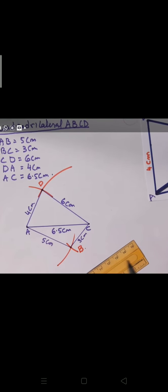Once you join those lines, your quadrilateral is done. The important thing is to write all the measurements on the figure — don't leave it blank. This is how we construct a quadrilateral when five measurements are given. Slowly we will also learn to construct quadrilaterals when angles are given too. See you, bye bye!